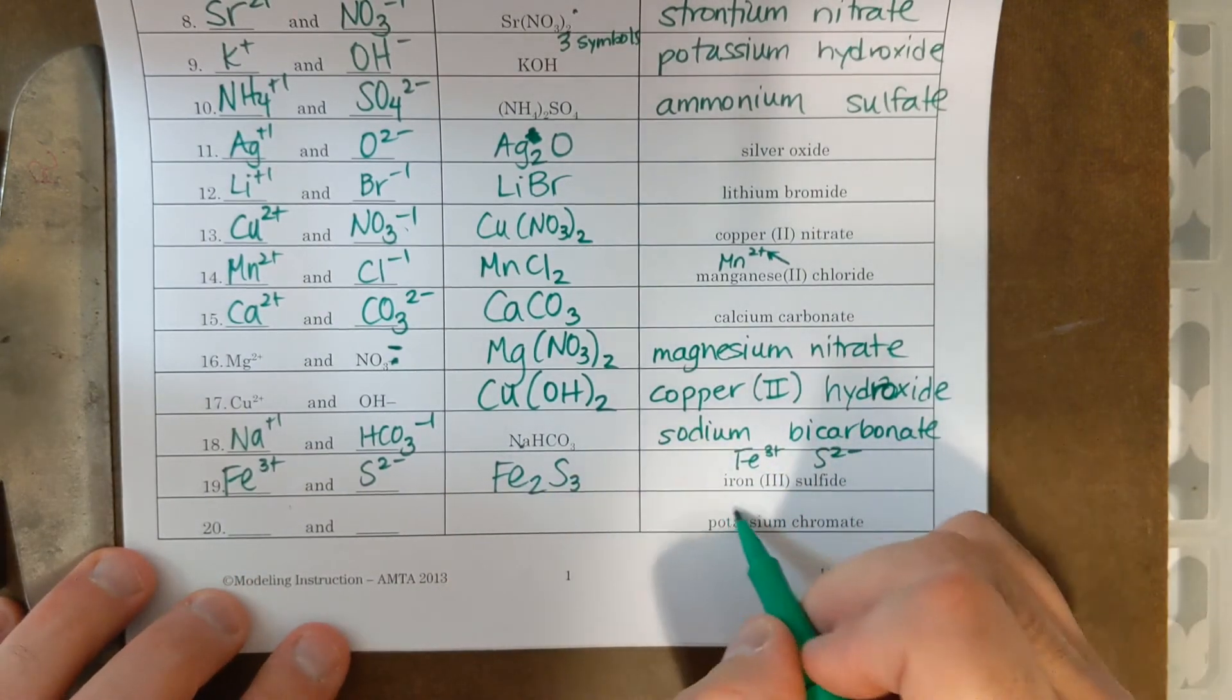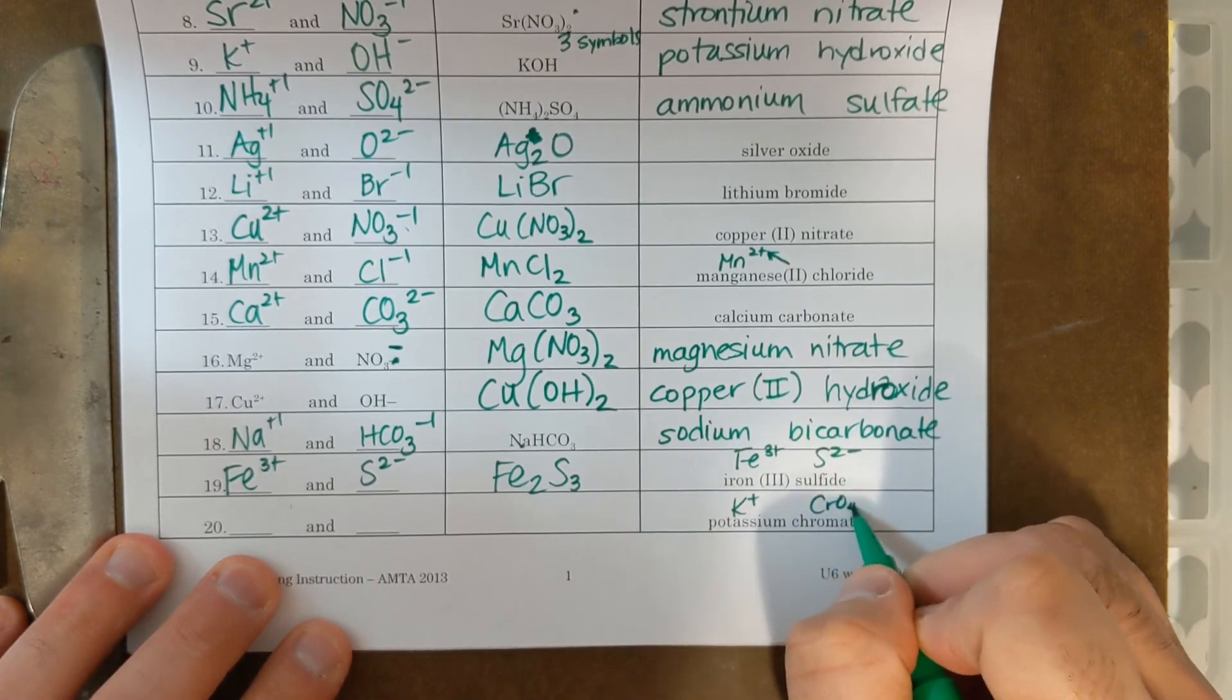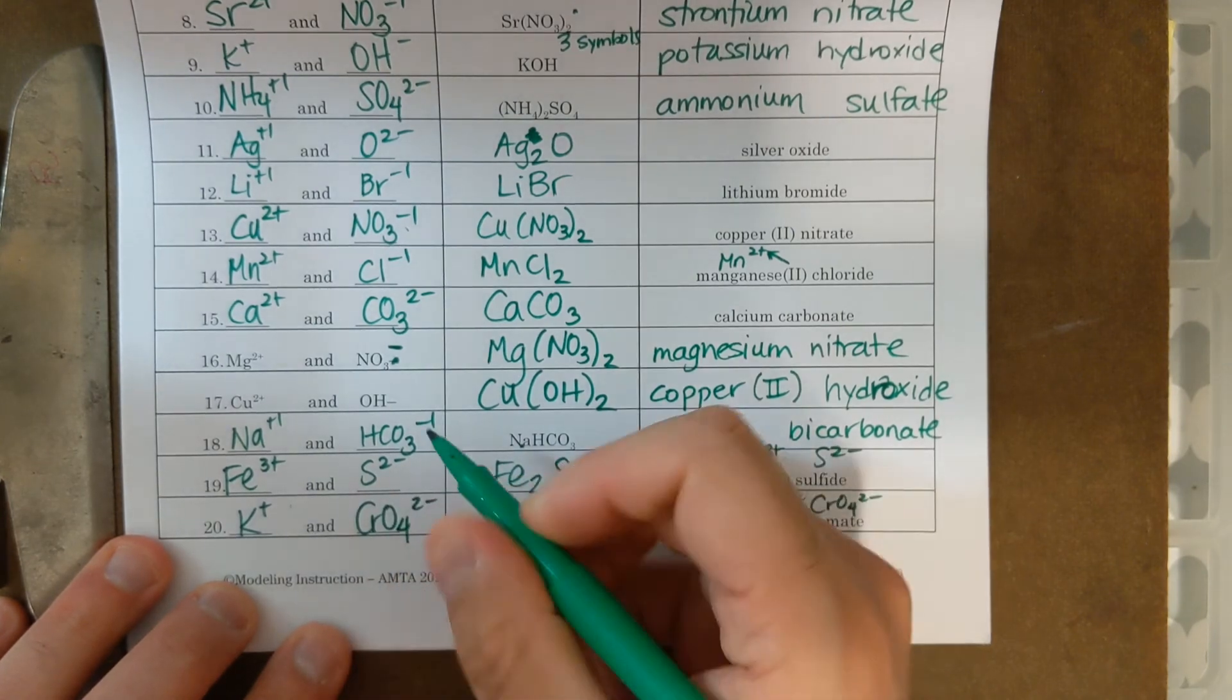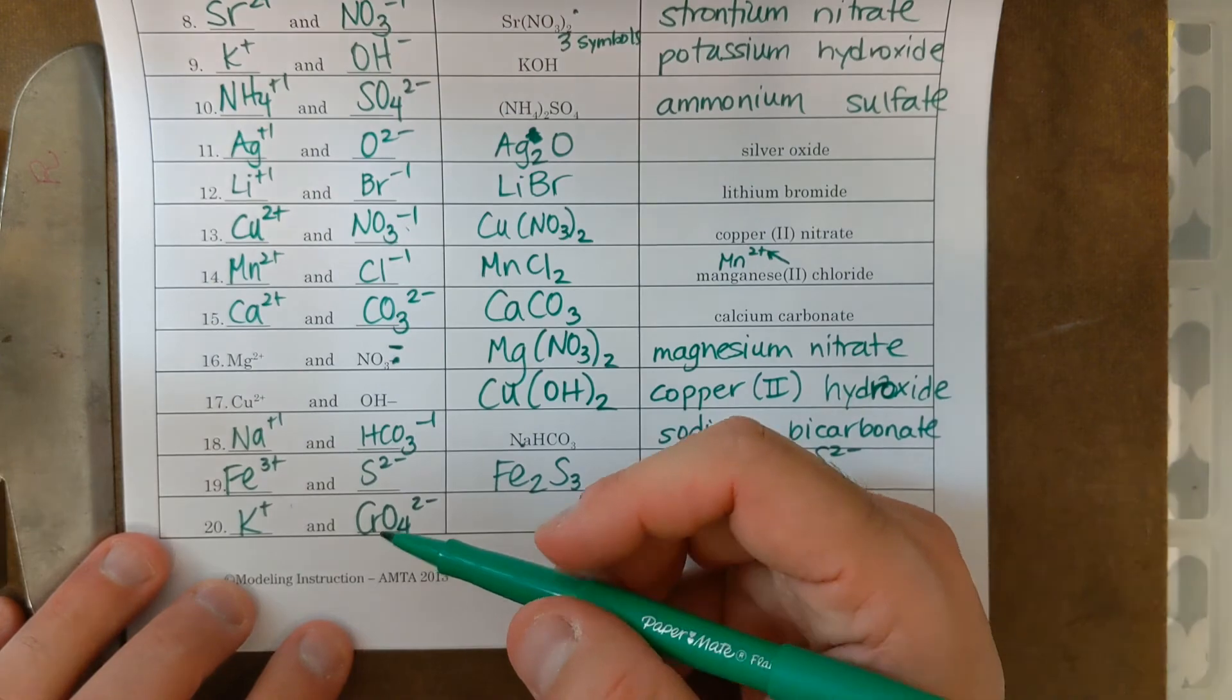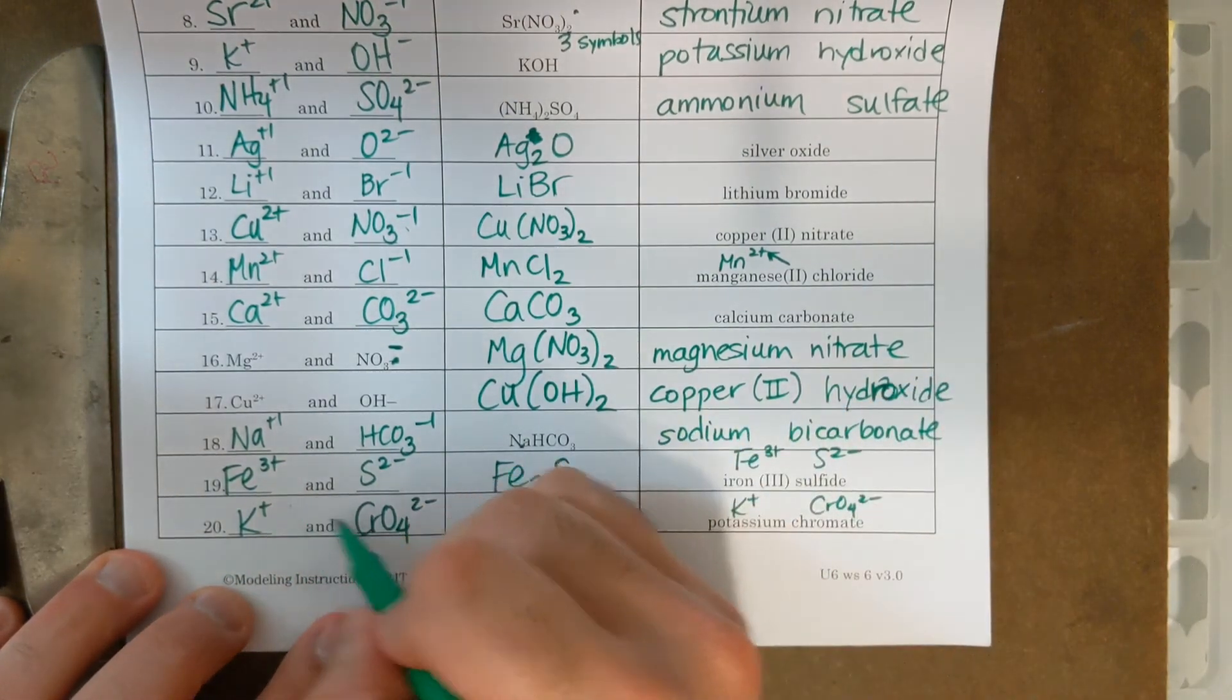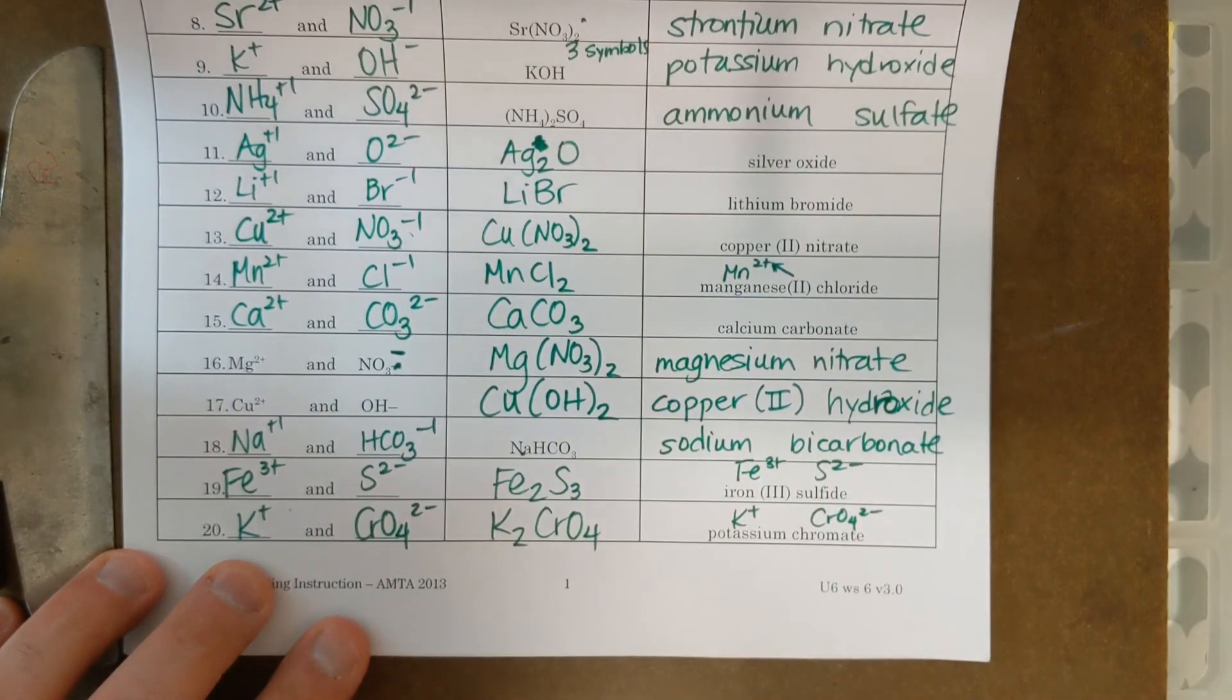And then finally on this page, we have potassium chromate. Potassium is K plus. Chromate is CrO4 two minus. CrO4 two minus. Now, if you didn't know about chromate, you can look on your common ions sheet to identify its charge and symbols. And potassium, of course, is K plus. It's in group one. If I do the crisscross method, I need two potassiums for every one chromate.